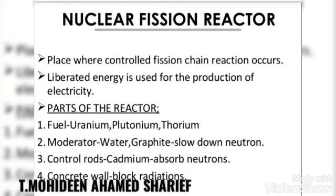Nuclear fission takes place in a reactor — the place where a controllable chain reaction occurs. The liberated energy is used for the production of electricity. The parts of a reactor include the fuel (uranium, plutonium, and thorium), the moderator (water or graphite to slow down neutrons), and a concrete shielding block to control radiation.